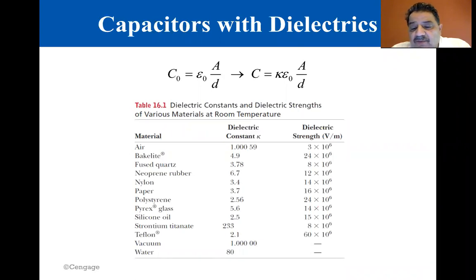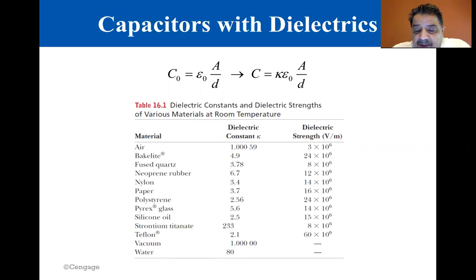In practice, the lowest value of D is limited by the electrical discharge that can occur through the dielectric material separating the plates. For any given plate separation, there is a maximum electric field that can be produced in the dielectric before it breaks down and begins to conduct. The maximum electric field is called the dielectric strength, and for air, its value is about three times ten to the sixth volts per meter.